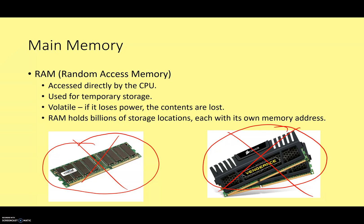What do we use RAM for? RAM holds all the instructions and data that you're currently using. It has to be transferred from secondary storage to RAM before it can be sent to the CPU. RAM holds billions of storage locations, and each one has its own unique address — going back to the first lesson. So each stick has the potential to store billions of pieces of data, each with its own address, each accessible by the CPU.